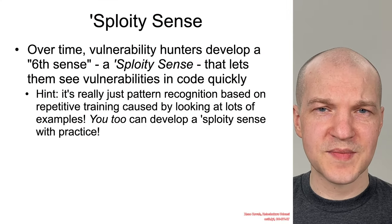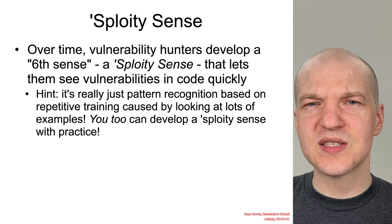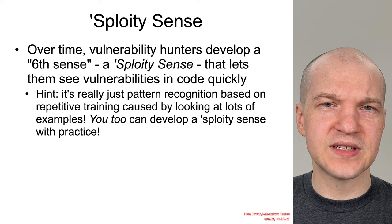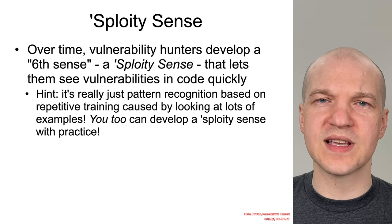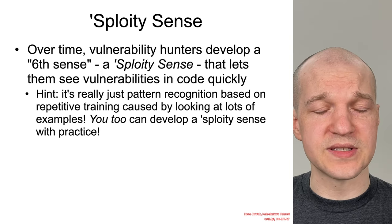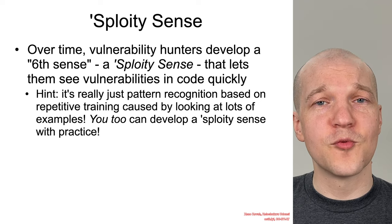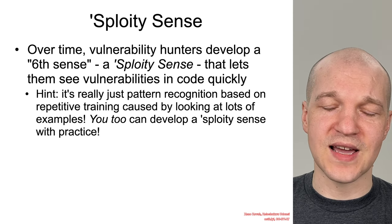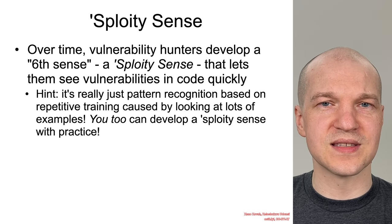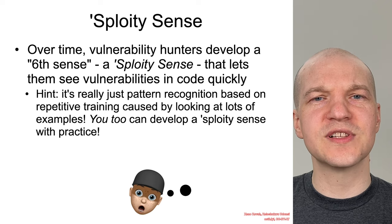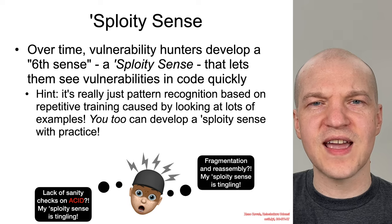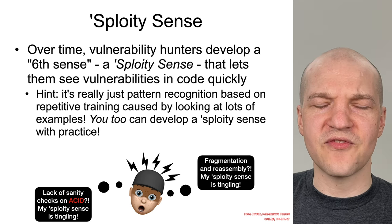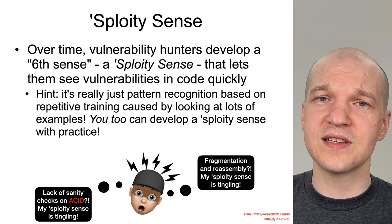Now let's talk about the 'sploity sense.' It's like Spider-Man's spidey sense — a supernatural danger detector. Vulnerability hunters, over time, from having looked at many examples of vulnerabilities, develop a sort of sixth sense — a sploity sense — about whether something is exploitable. It's a recognition of danger in the code: attacker-controlled inputs not being sanitized, arbitrary-sized copies, and similar patterns. Ultimately, this sploity sense is really just pattern recognition — like knowing that fragmentation and reassembly has historically led to many vulnerabilities, or that a lack of sanity checks very often leads to exploitable bugs.